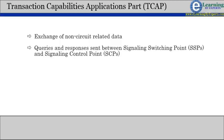An SSP uses TCAP to query an SCP to determine the routing number associated with a dialed 800, 888, or 900 number.